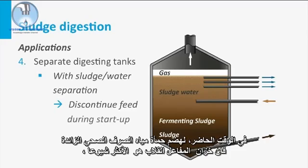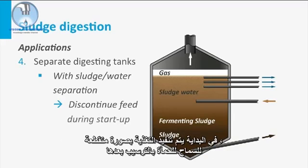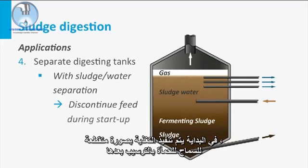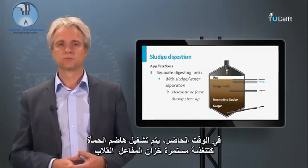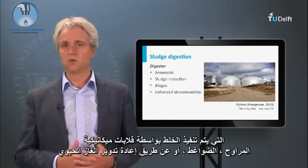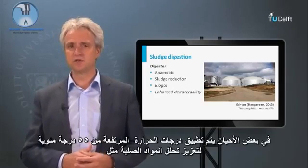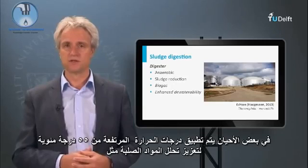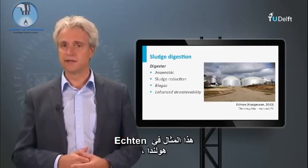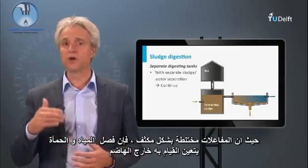At present, for the digestion of excess sewage sludge, a stirred tank reactor is most commonly applied. These reactors are generally heated to 30–35 degrees Celsius, considered an optimum temperature for digestion. Sludge digesters are now operated as continuously fed stirred tank reactors, in which mixing is performed with mechanical stirrers, impellers, or via biogas recycling. Sometimes, high temperatures of 55 degrees Celsius are applied to enhance solids degradation, such as at the example in Echten, the Netherlands. Since reactors are intensively mixed, sludge–water separation is sometimes performed outside the digester.